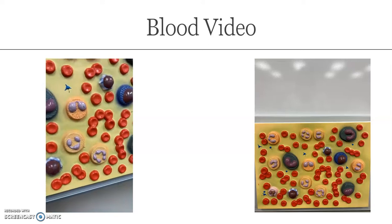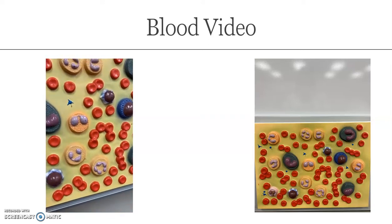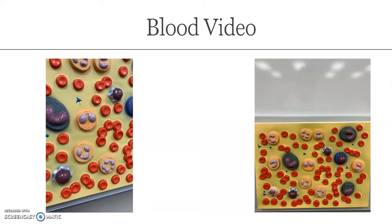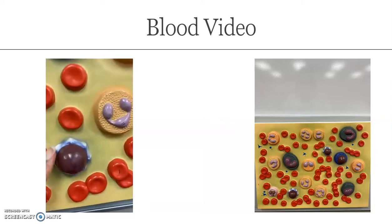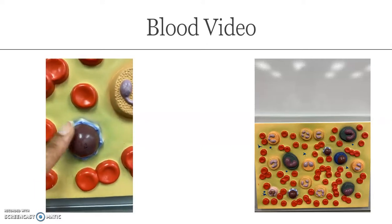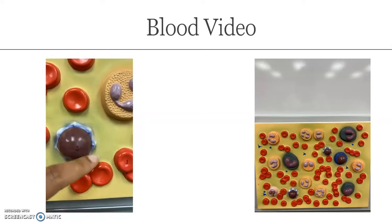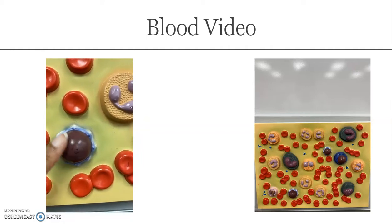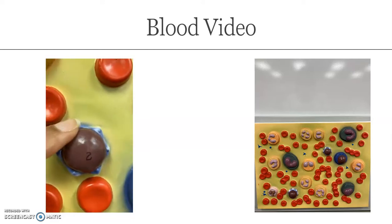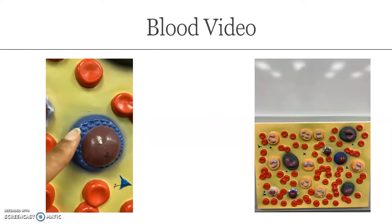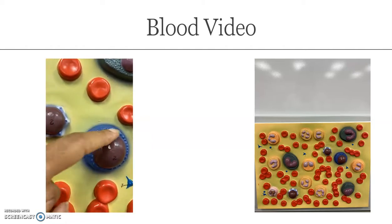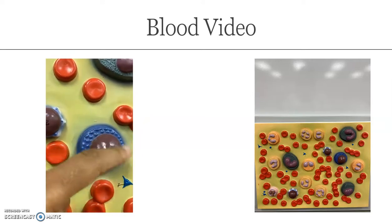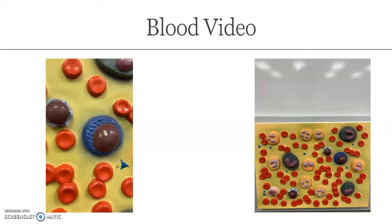Neutrophils are the most abundant. Then we have lymphocytes as the next most abundant present within our blood. Lymphocytes are the white blood cell where the nucleus takes up almost the entire cytoplasm of the cell — you can see there's only a rim around it. Here's one lymphocyte, here's the second lymphocyte, and this is also considered a lymphocyte as well. It has a rim of cytoplasm inside that cell.